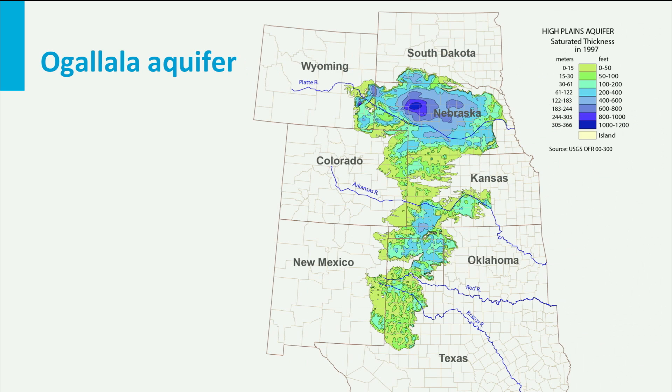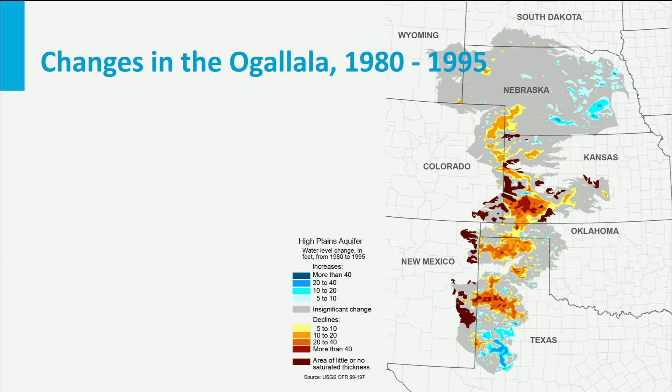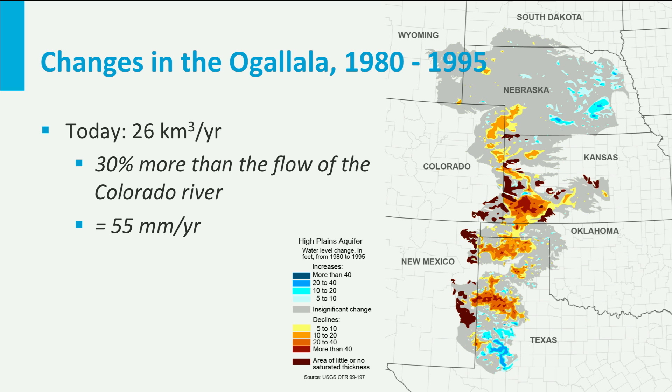Groundwater is being used around the world for drinking water, industrial process water, and especially agriculture. A famous example of agricultural groundwater use concerns the Ogallala aquifer, one of the largest aquifers in the world. The Ogallala underlies much of the high plains of the United States, running from South Dakota in the north to Texas in the south, covering about 450,000 square kilometers. Groundwater pumping for agriculture started in the 1940s. Today, about 26 cubic kilometers per year is pumped from the Ogallala aquifer — about 30% more than the natural flow of the Colorado River — equivalent to 55 millimeters per year over the complete aquifer. The high plains are relatively dry, so in most places recharge is much less than the amount of water extracted. This picture shows the resulting drop in the water table in feet from 1980 until 1995.